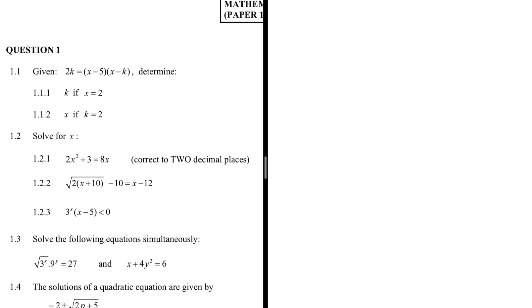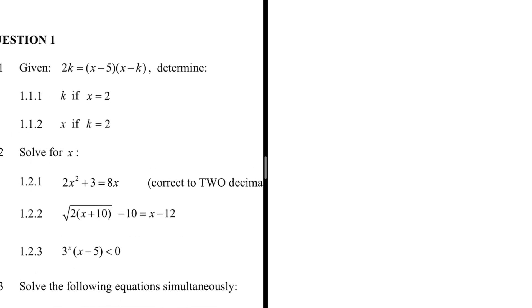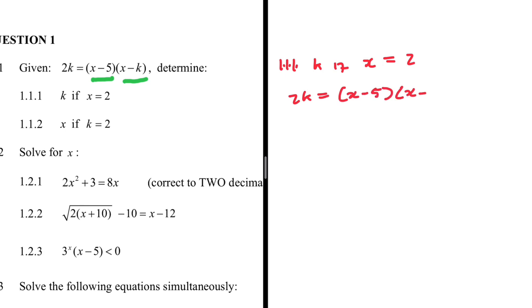Let's take a look at 1.1. We're given Q(k) = (x - 5)(x - k) and we're supposed to determine 1.1.1: k if x = 2. It looks quite straightforward. We have 2k = (x - 5)(x - k) and we're looking for k if x = 2, so we substitute 2 in place of x: 2k = (2 - 5)(2 - k).